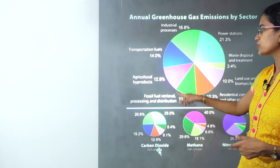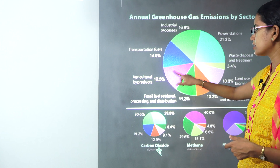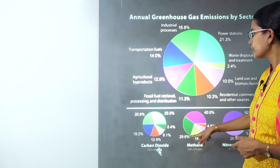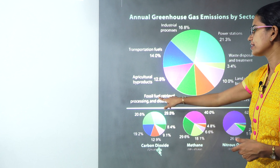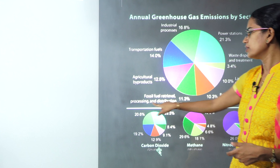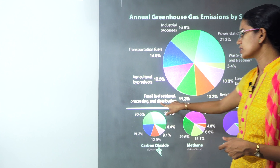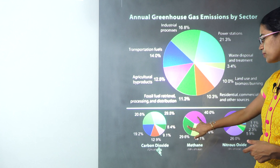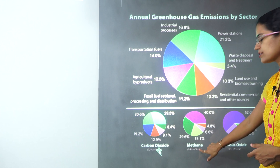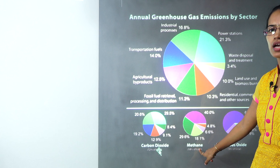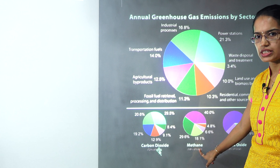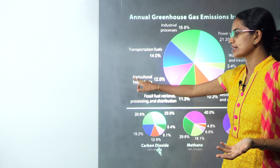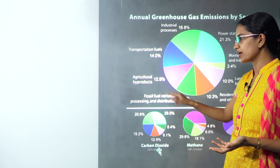When it comes to methane, the highest proportion comes from the agricultural byproducts followed by the fossil fuel retrieval, processing, and distribution. So these two sectors contribute to the highest methane emissions as a greenhouse gas, with the highest being agricultural byproduct.